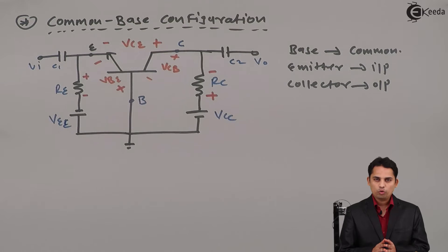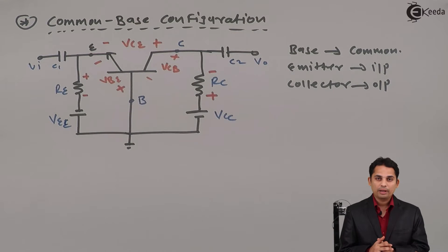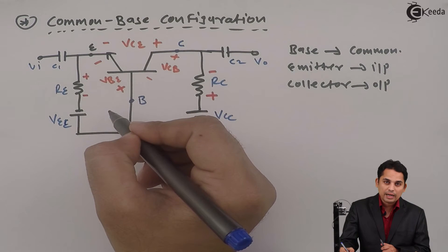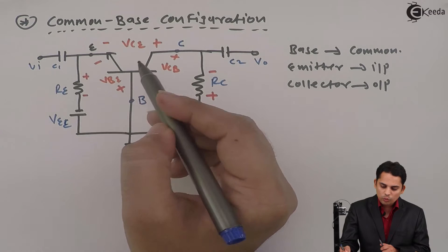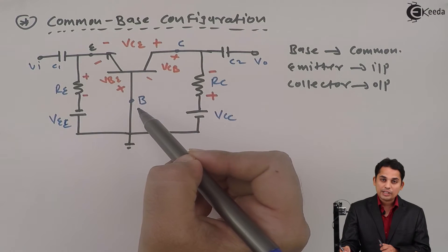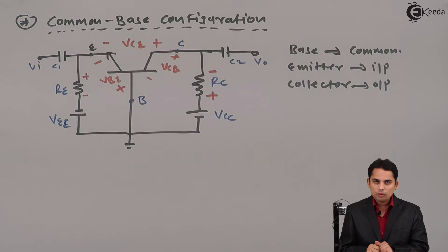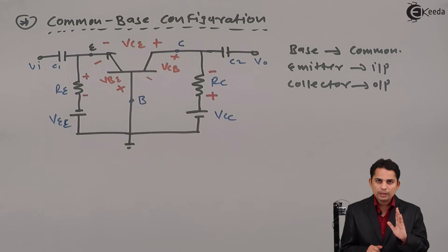In DC analysis, we will try to find out current and voltage. It is very important to identify which current is contributing to the Q point. In this circuit, we will find input current IE, whereas the voltage between collector to base will be the second parameter. There is one Q point having two parameters: one is current and the other is voltage.